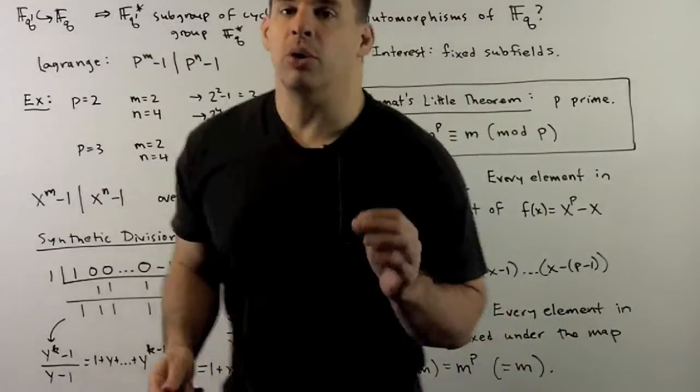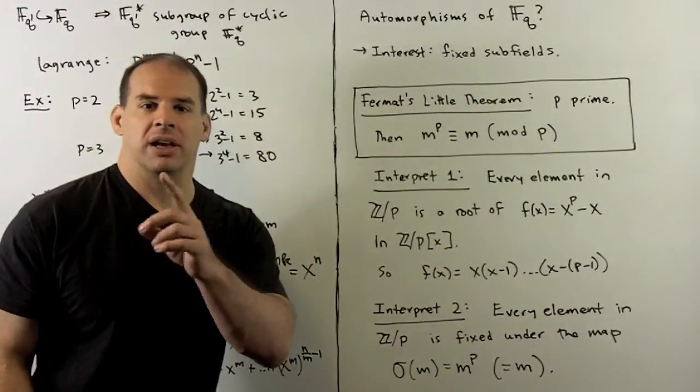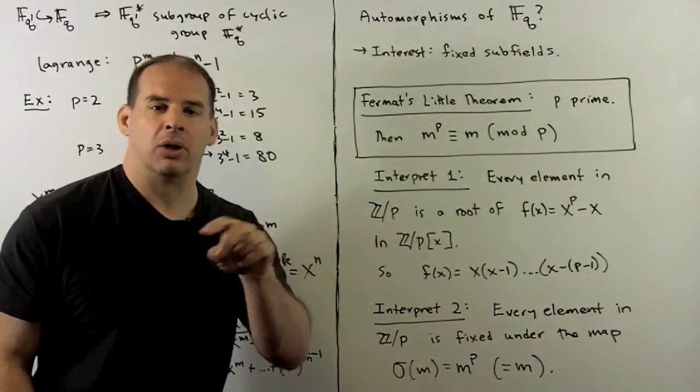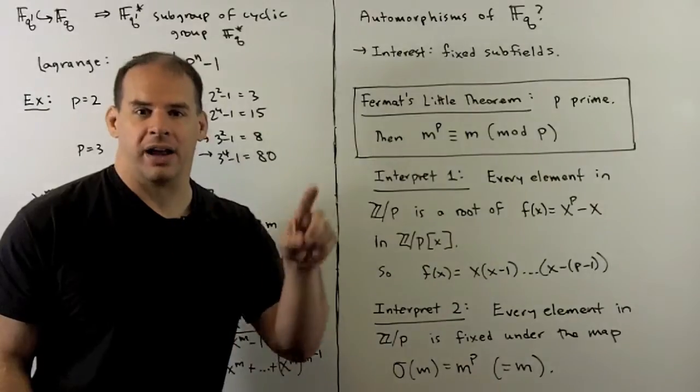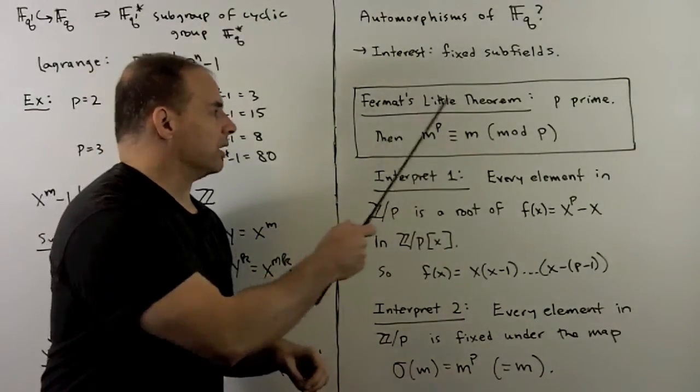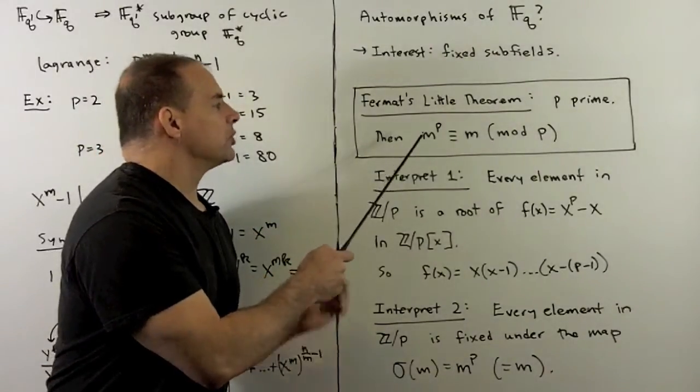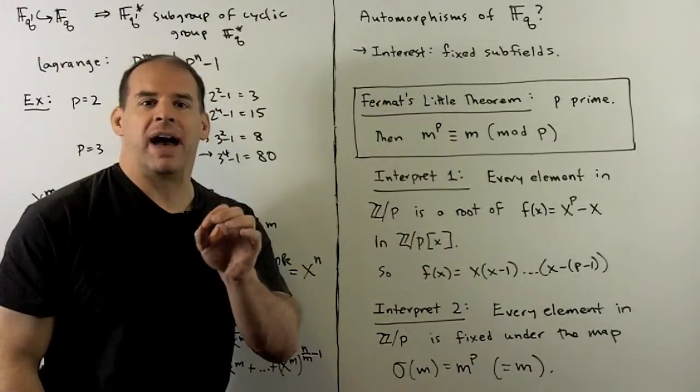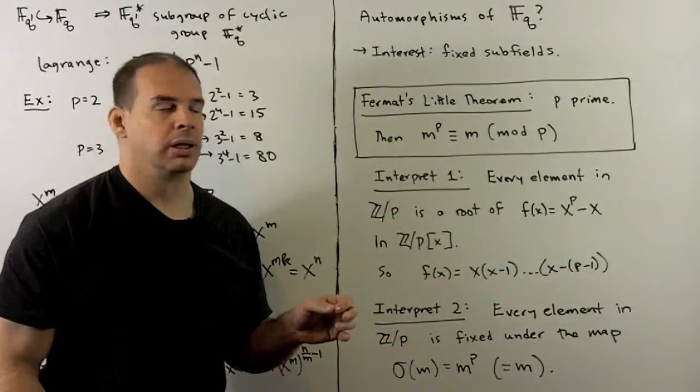Now, moving on to automorphisms. Galois theory promises a connection between automorphisms and intermediate fields by looking at fixed fields. So we want to look for things that are fixed in finite fields. First clue is going to be Fermat's Little Theorem. So if we have p a prime, then m to the p is congruent to m modulo p. Another way to interpret that, p divides m to the p minus m in the integers.